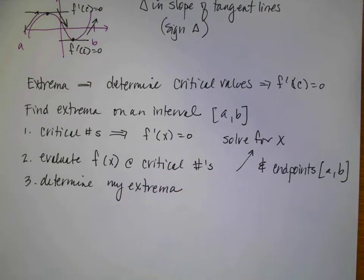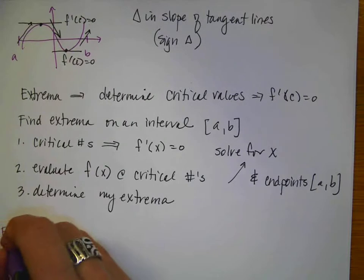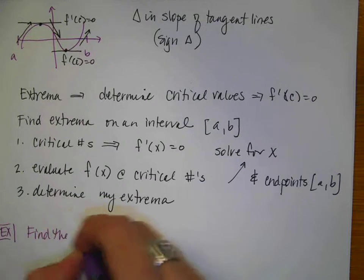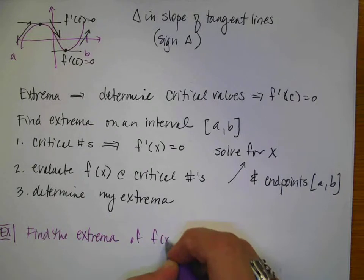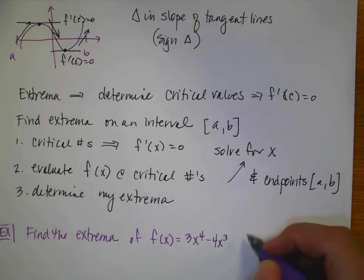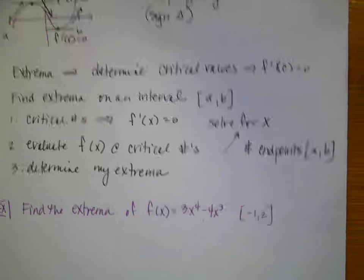So this is just kind of the beginning of Chapter 3, and we're going to do very little work — unlike what will be coming later when we start talking about first and second derivatives, extrema, concavity, and all kinds of fun things. For our first example, we're just going to make it nice and polite. I want to find the extrema of f of x equals 3x to the fourth minus 4x cubed on the interval from negative 1 to 2.